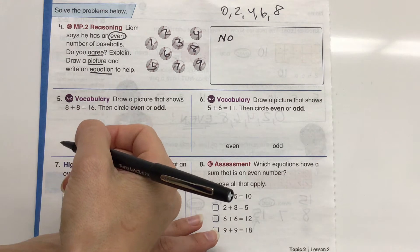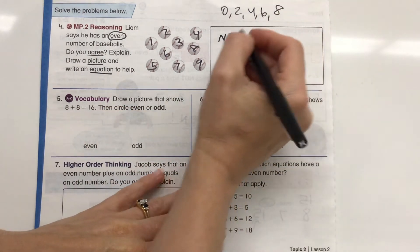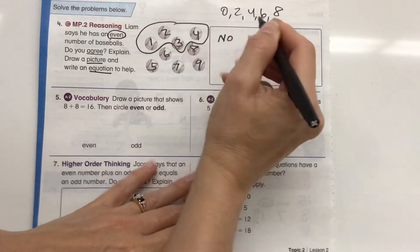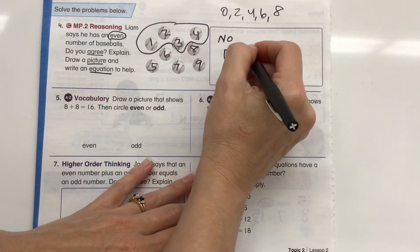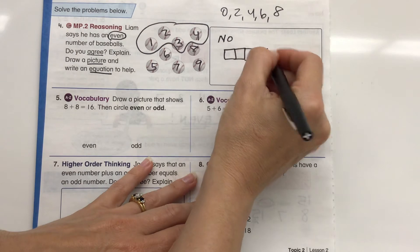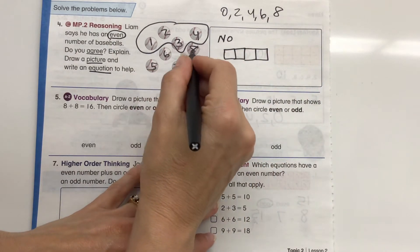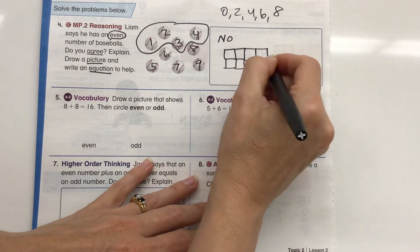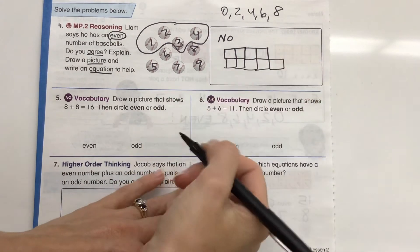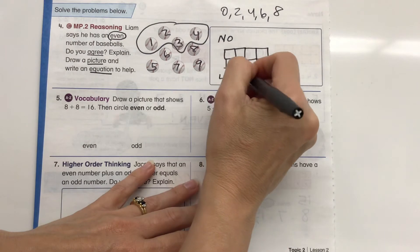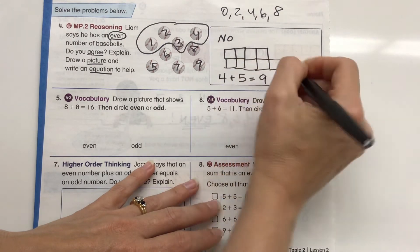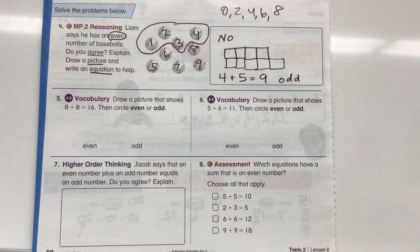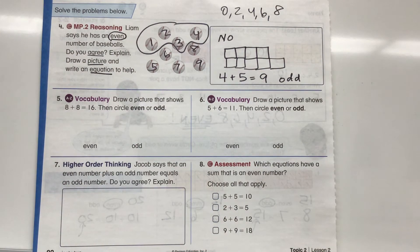Draw a picture and write an equation to help. So what I'm going to do is I'm going to do 1, 2, 3, and 4. 1, 2, 3, 4 plus 1, 2, 3, 4, 5 more balls. 1, 2, 3, 4, 5. And 4 plus 5 equals 9, which is an odd number.